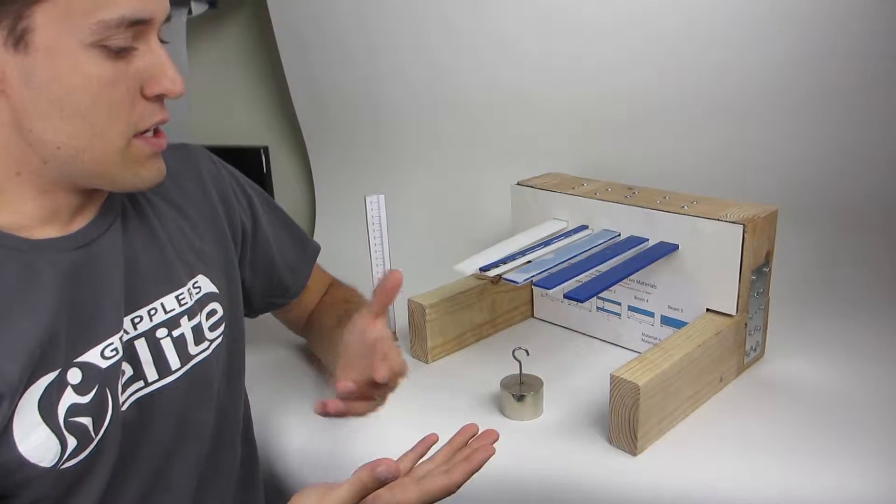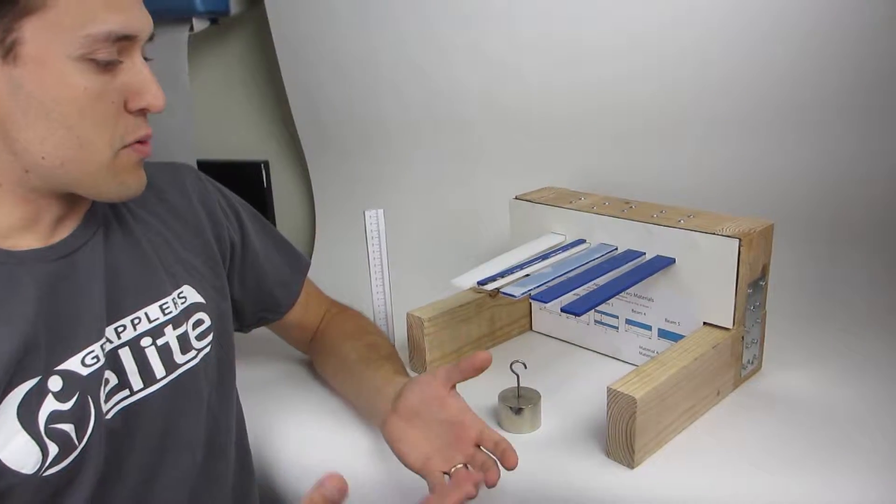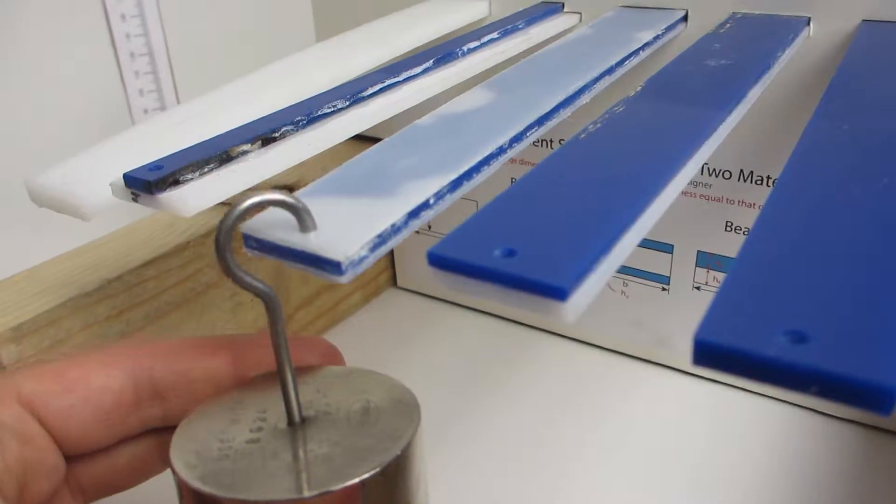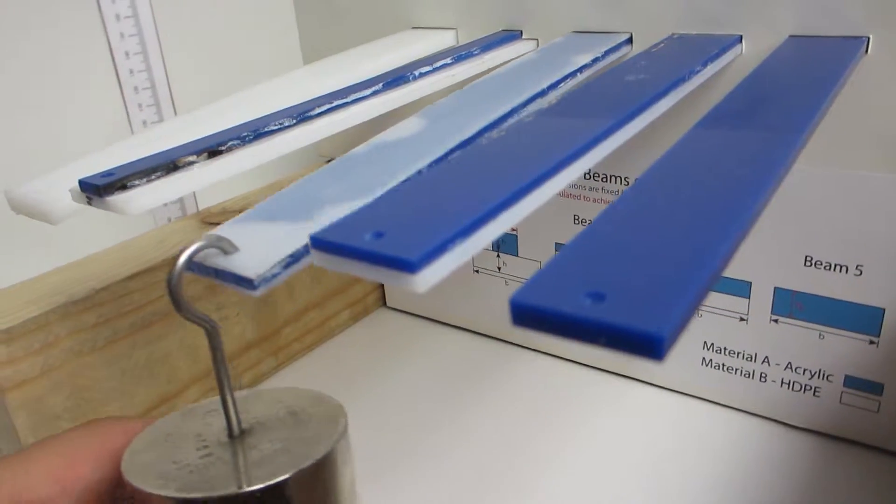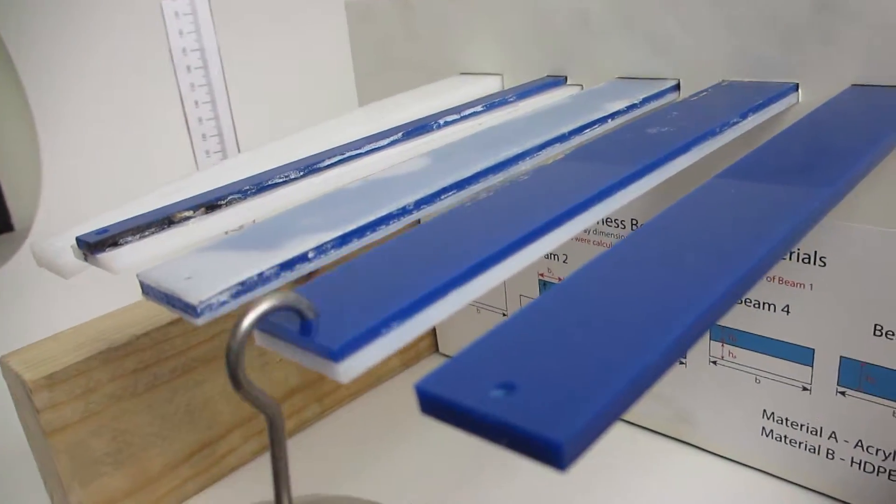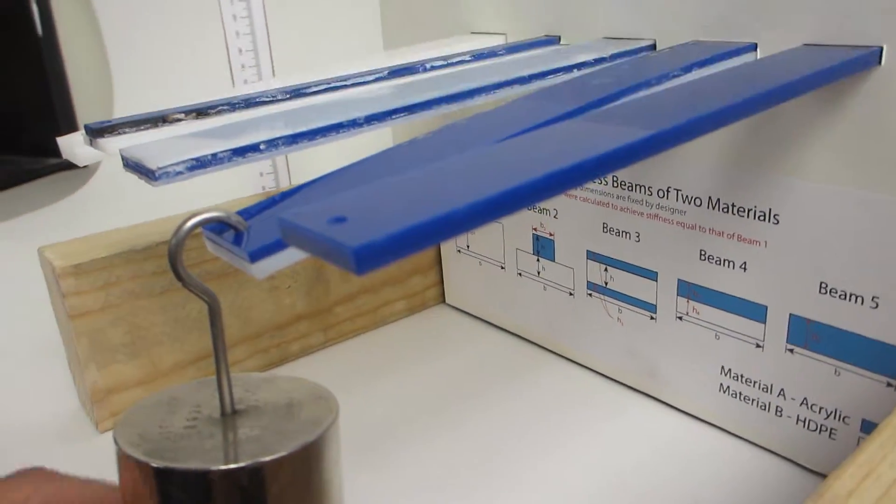And so now that I've explained a little bit about equivalent stiffness beams, the way that you can tell that beams are equivalent stiffness is if you apply the same load and they bend the same amount. So if they deflect the same amount.